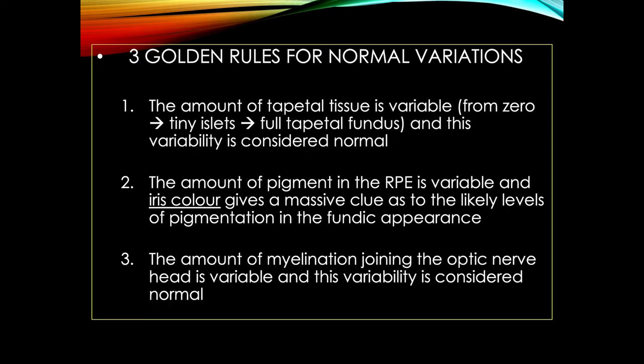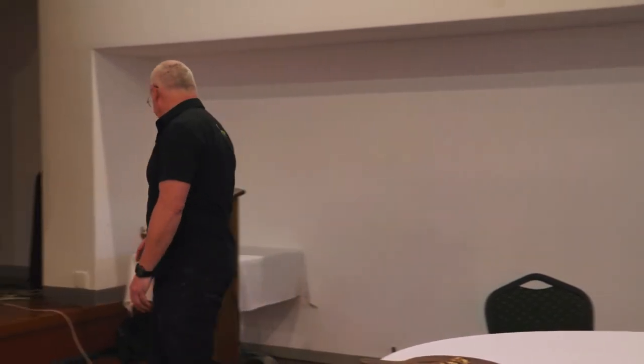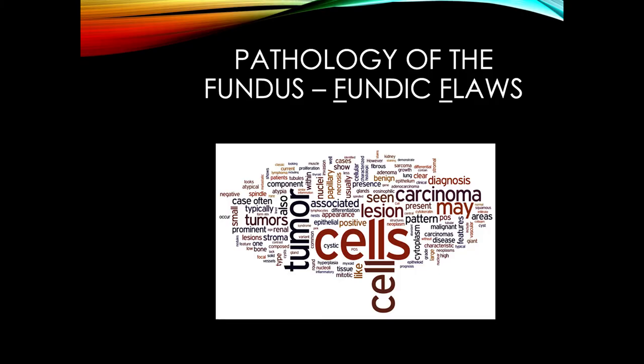Quick recap — golden rules for normal variations: the amount of tapetal tissue is variable from zero to loads; a single islet is normal, a massive area is normal — there's no pathology associated with the presence or absence of tapetum. The amount of pigment in the RPE is variable; the iris will give you a massive clue. The amount of myelination joining the optic nerve head is variable and that variability is normal. Now: fundic floors — pathology.